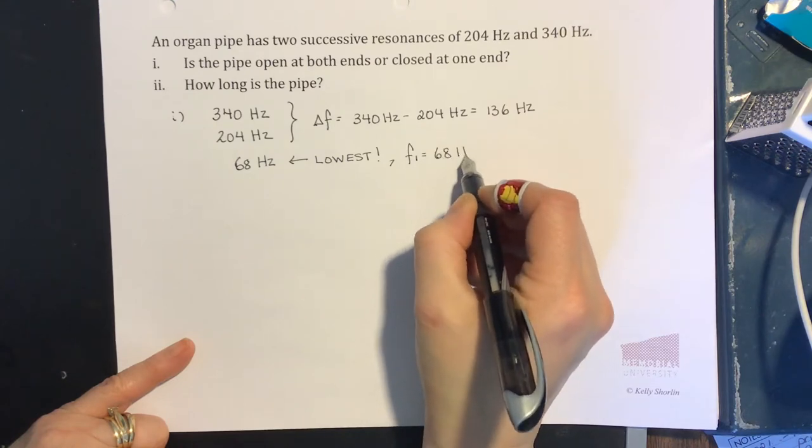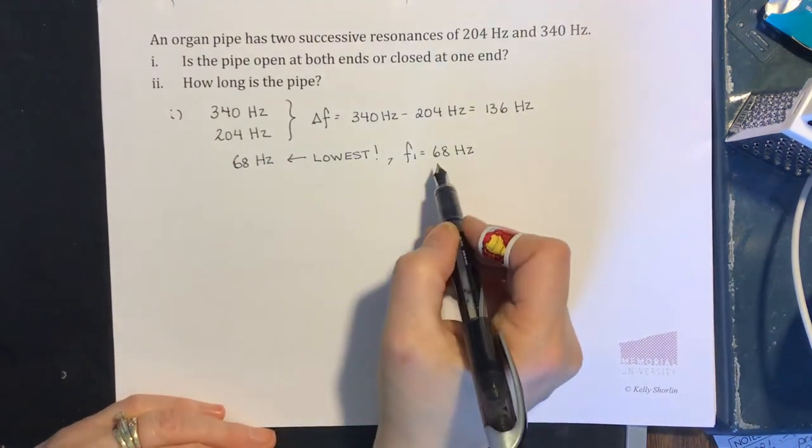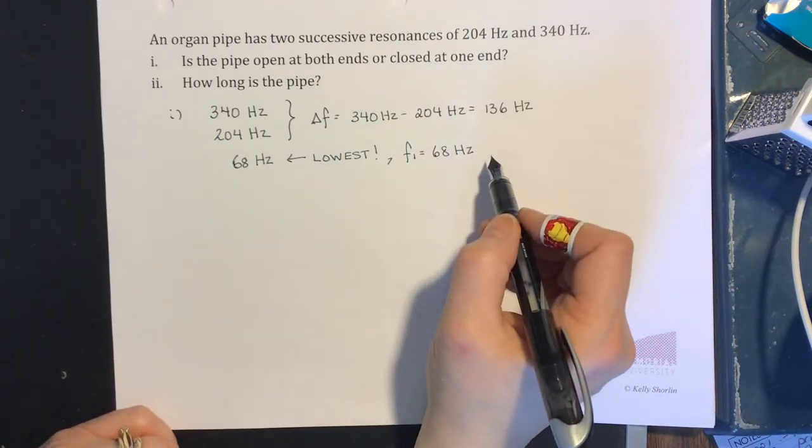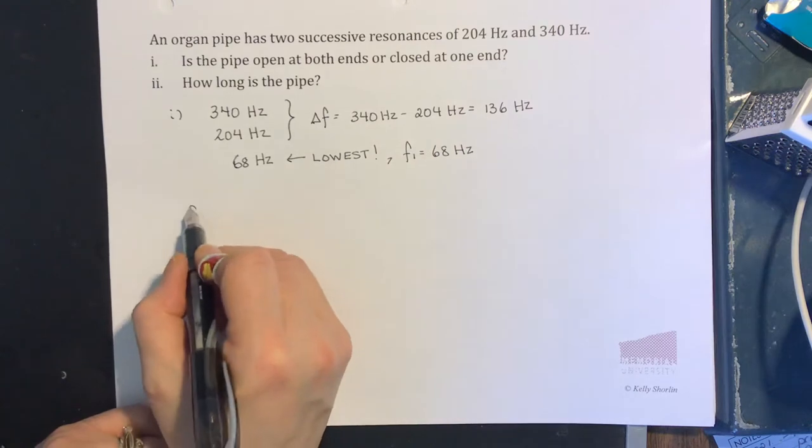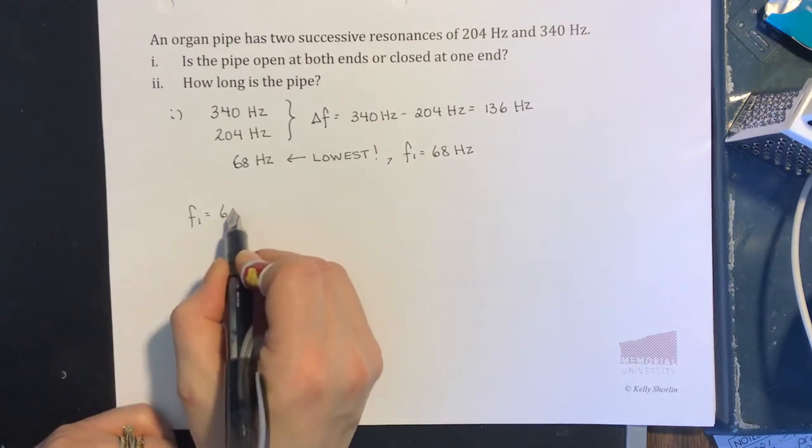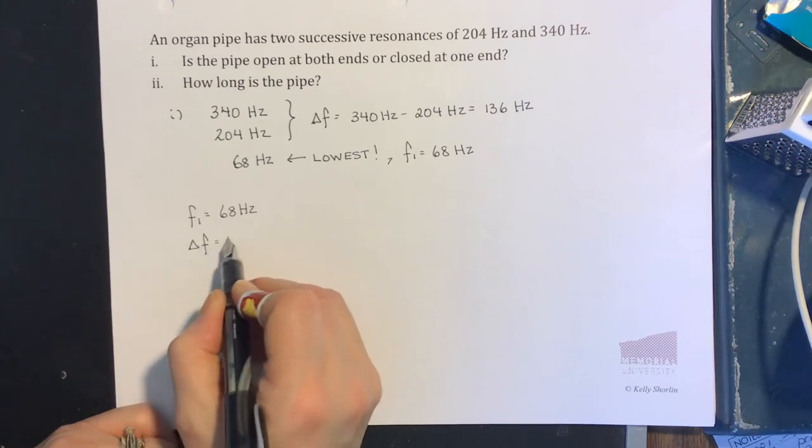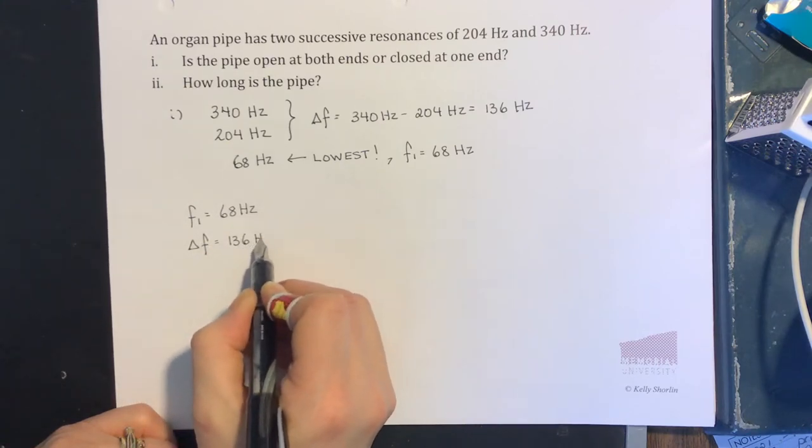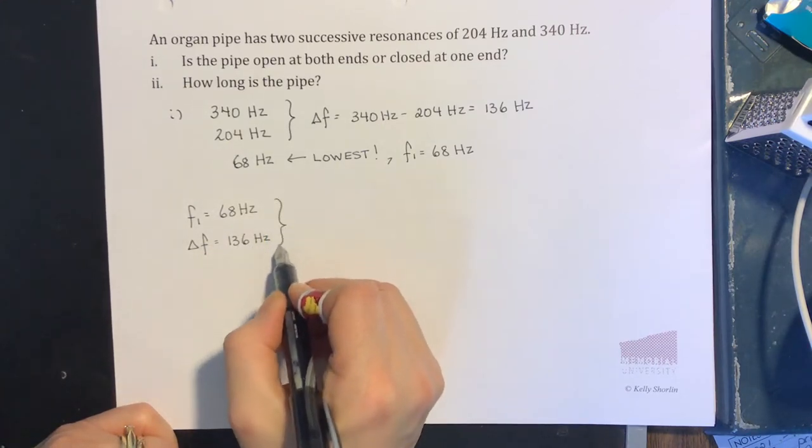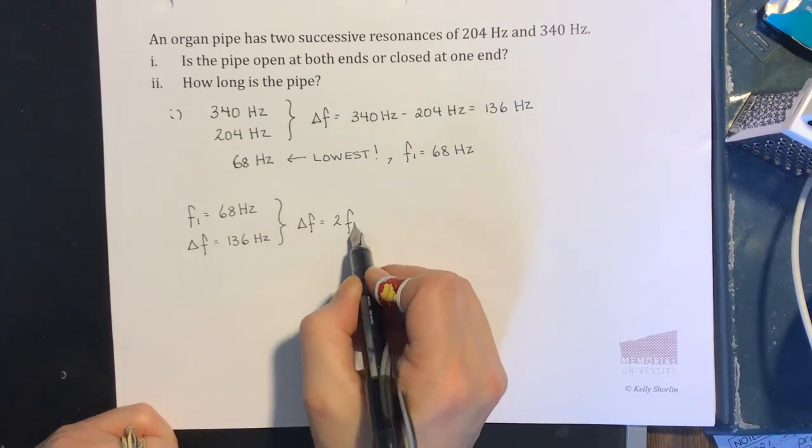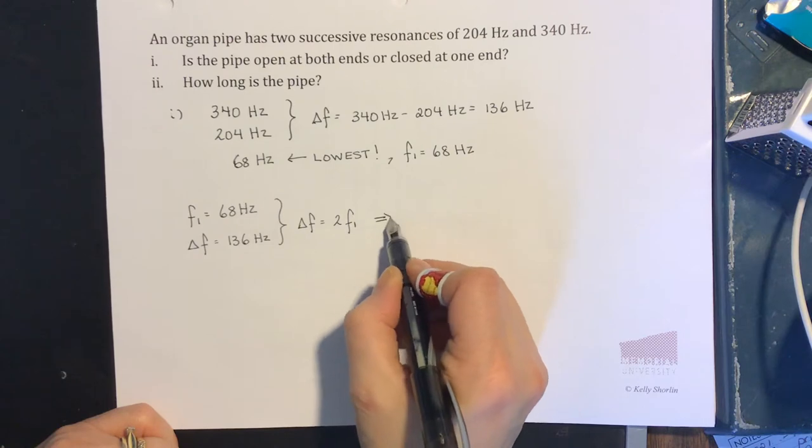Now we know this is the fundamental. We know the change is 136. We can use that information to tell us about the tube. F1 is 68 hertz, delta F is 136 hertz. So we see that delta F is twice the fundamental, and that's a feature of tubes open at one end and closed at the other.